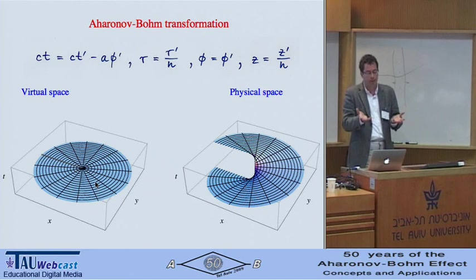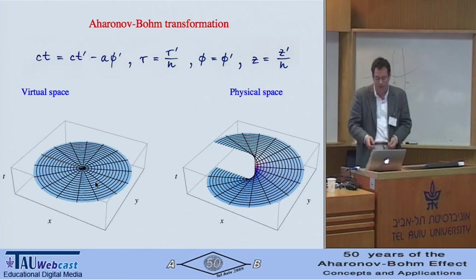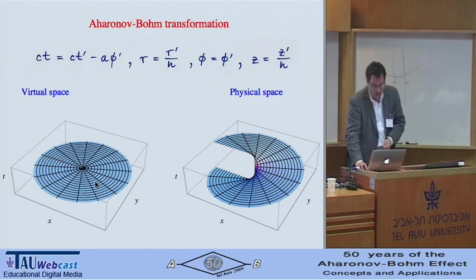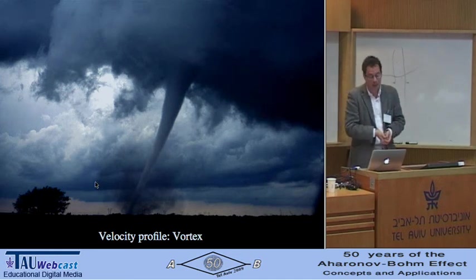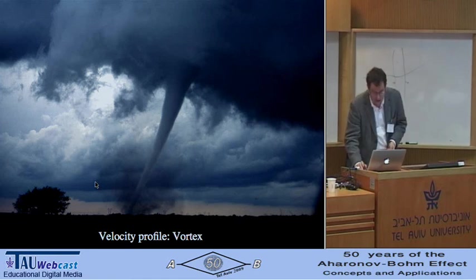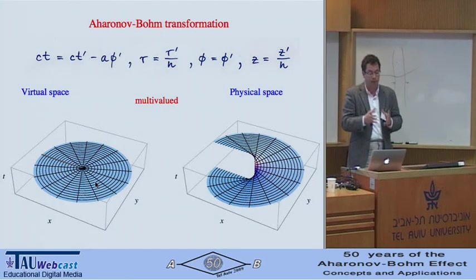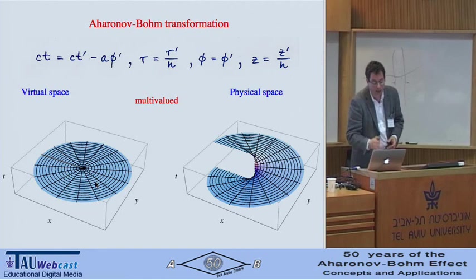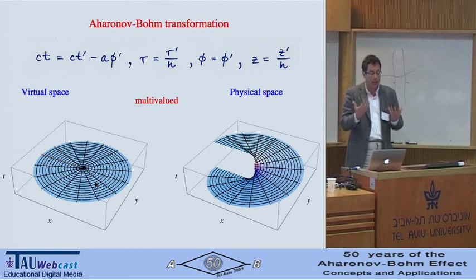Then you can ask, what kind of system do you need? What kind of velocity distribution — velocity profile — generates this? You substitute it simply in that formula and find that you need a vortex in the moving dielectric material to make that transformation happen. Now, this is a transformation from a virtual space to physical space, but there's a problem: it's multivalued, because it connects the angle with time. Time runs from minus infinity to plus infinity, and the angle is confined between 0 and 2 pi.